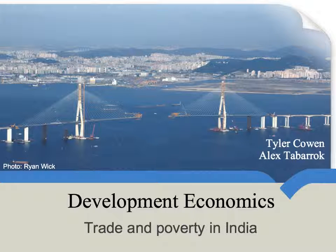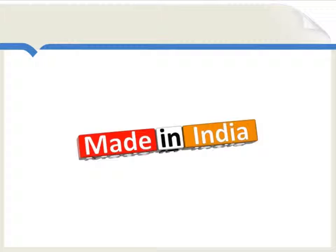What happened to poverty in India when the country moved to freer trade? After independence from Great Britain, trade policy in India turned in the direction of high tariffs and protectionism. The goal was that things consumed in India would be made in India. It was even quite difficult to get a hold of an American Coca-Cola in India during this period.